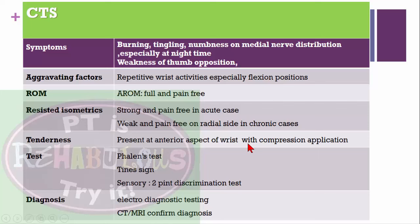Tenderness is present on the anterior aspect of the wrist with compression. Positive tests include Phalen's test and Tinel's test. For sensory assessment, we can check two-point discrimination. Diagnosis is confirmed by CT scan or MRI, and we can do electrodiagnostic testing like nerve conduction velocity testing as per the prescription of your neurophysiologist.